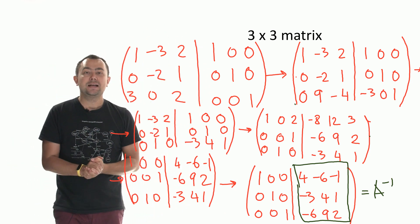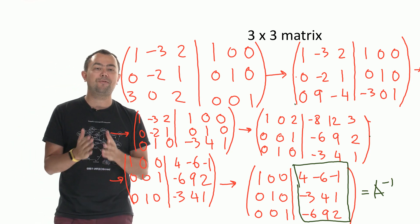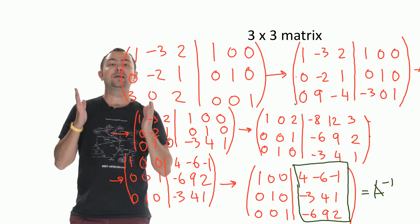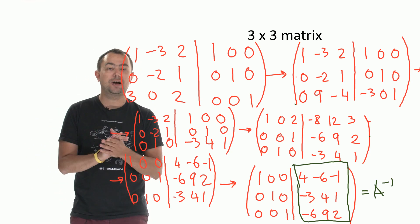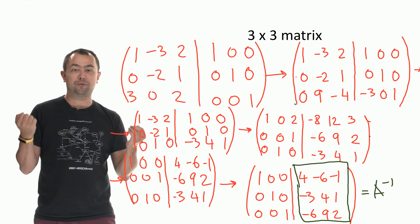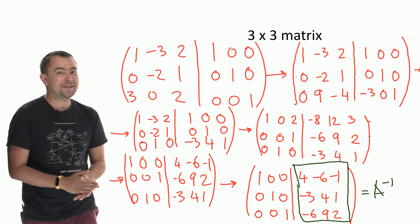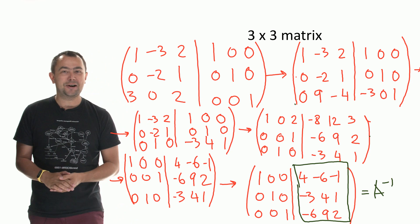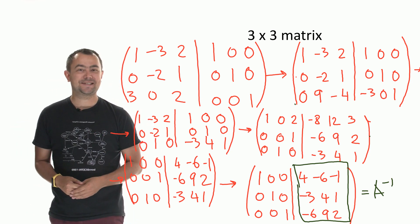So A to the power minus 1 is the inverse matrix of my original matrix. Now, it is a very useful method, the Gauss-Jordan method, to find the inverse of a matrix. It works for any square non-singular matrix. So yes, you can try out a 4x4 or a 5x5 matrix. Try out this method. Let me know what you think about it in the comments below. Thank you very much for listening. This is Vlad and see you next time.